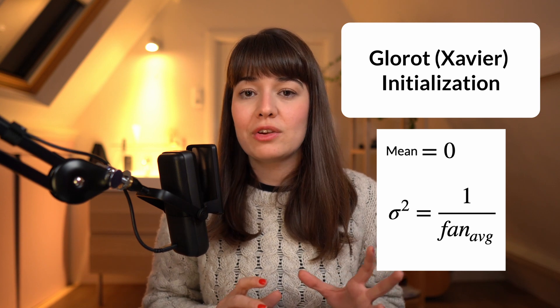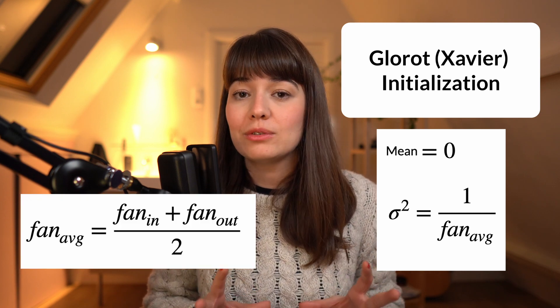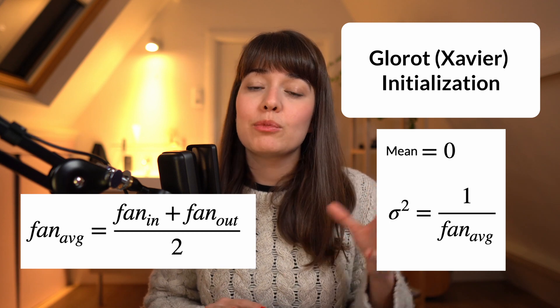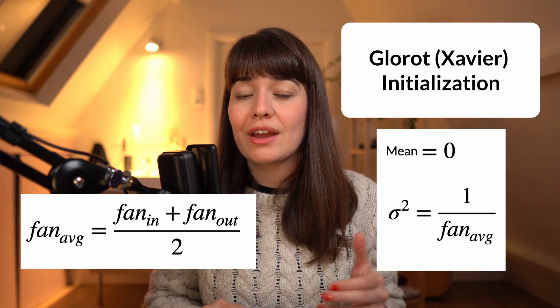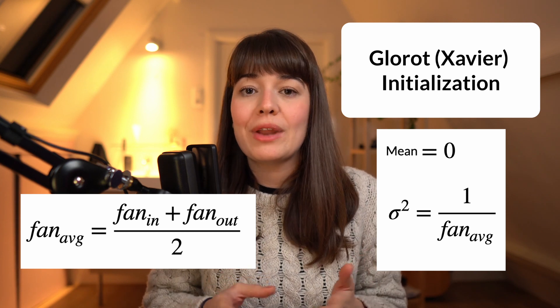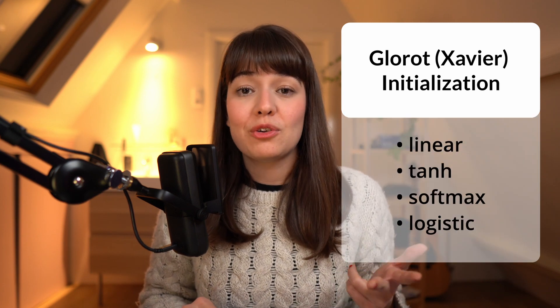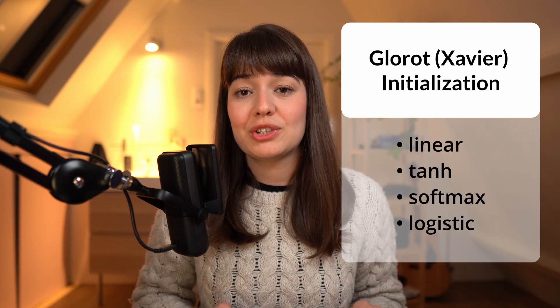The fan average is calculated as the average of fan in and fan out. Fan in is the number of inputs coming into this layer, and fan out is the number of outputs, also known as the number of neurons in this layer. Glorot initialization is the default technique in the Keras deep learning library, and it is best used with linear, tanh, softmax, or logistic activation functions.